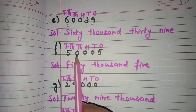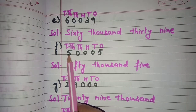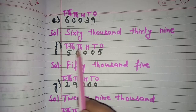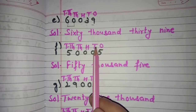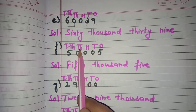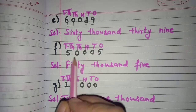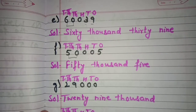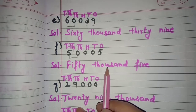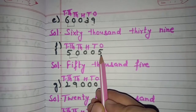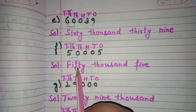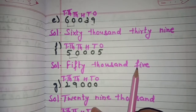Now next part f: 50,005. Again we mention the places — ones, tens, hundreds, thousands, ten thousands. The ten thousands and thousands place come under the thousands period, so it is 50,000. And here at ones place we have 5, so we write 5. The number name is fifty thousand and five.